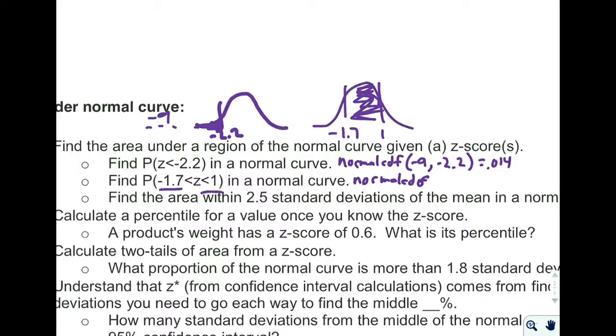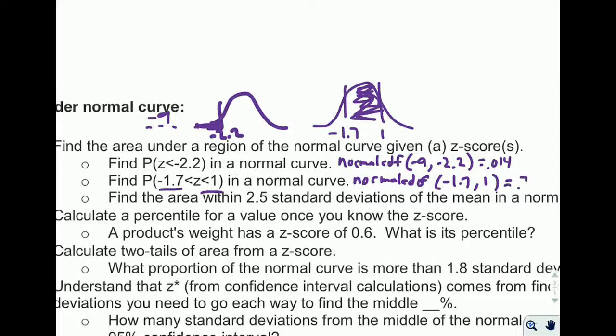So normalCDF of, and I go from my left again, negative 1.7, to my right, I stop at 1. And when I do that, 0.797 is what I get. So about almost 80% of the normal curve is trapped in that region.